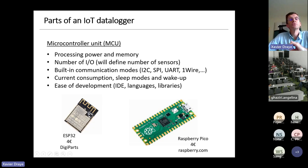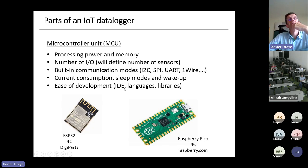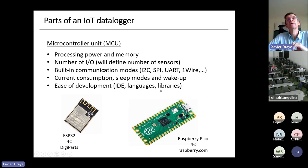The current consumption of microcontrollers is an important factor — they are mostly the hungriest device in the logger — but many have different sleep modes. You can wake them up and put them back to sleep so that between two measurements they essentially don't consume much. Another important aspect is ease of development. The Raspberry Pico and the ESP32 come with an integrated development environment, support C and Python for rapid prototyping, and have many libraries available. The cost is four euros for one microcontroller.